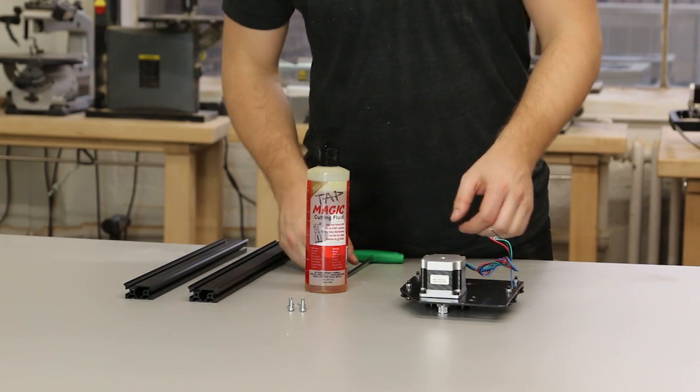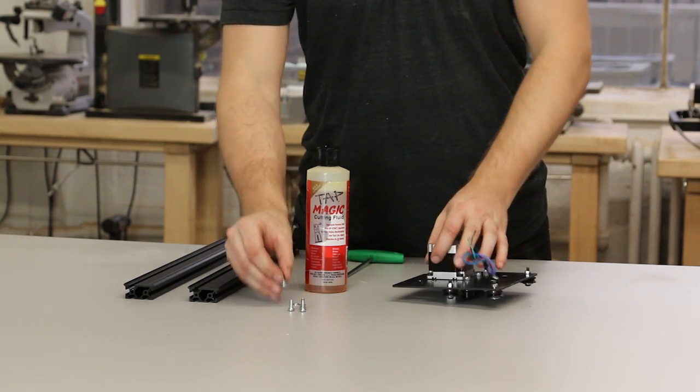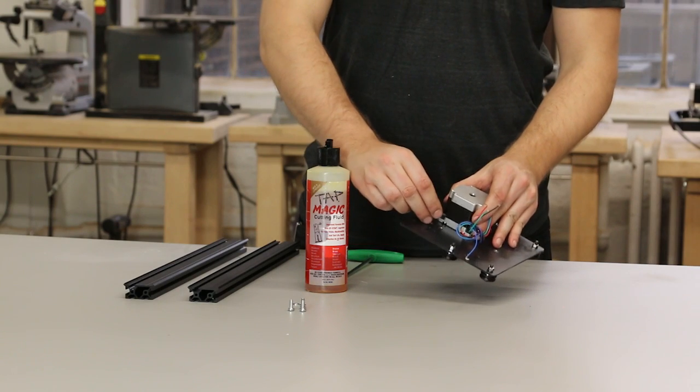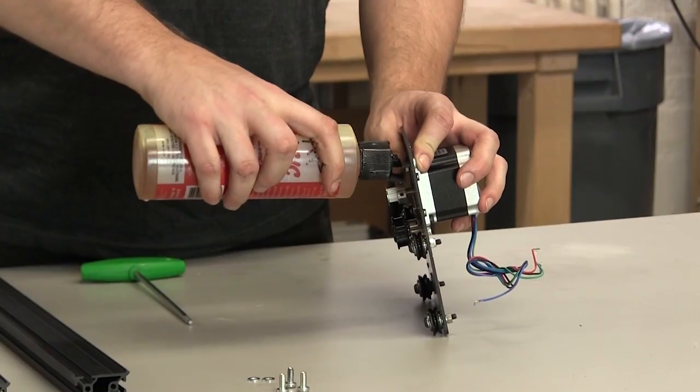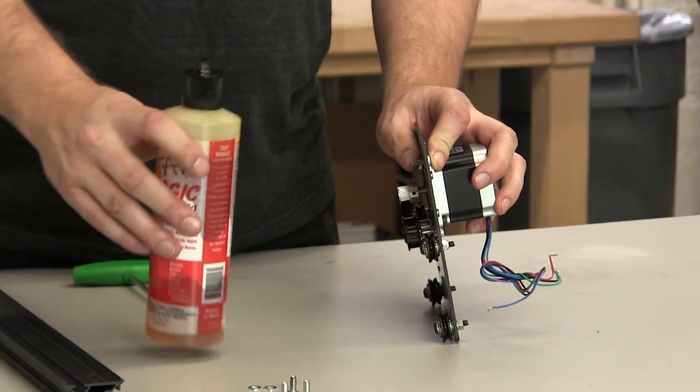Now we're going to assemble the X-axis of your X-carve. We'll be using self-tapping screws to attach two pieces of maker slide to one of the motor mount plates. Doesn't matter which plate.